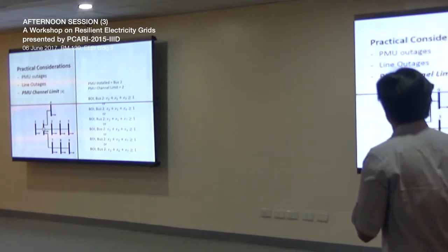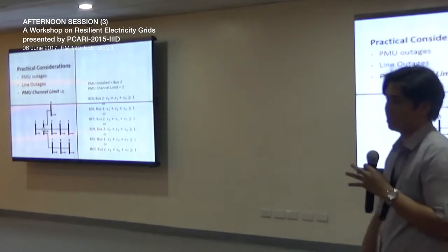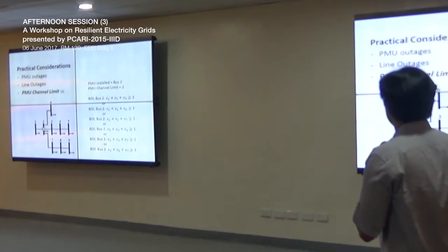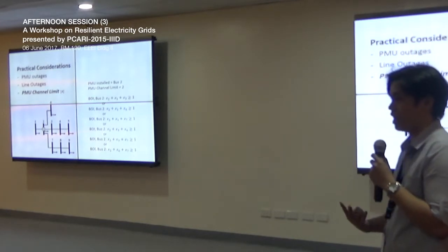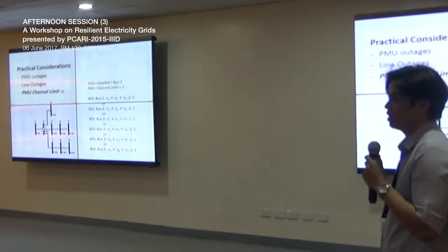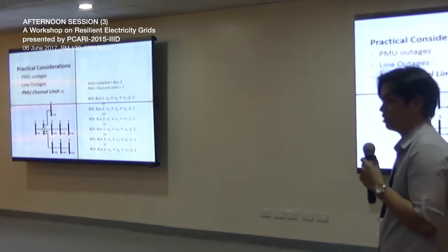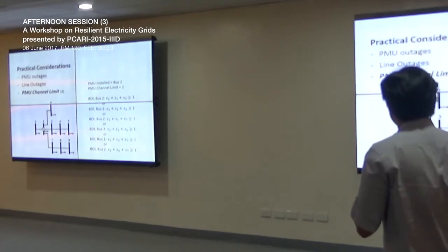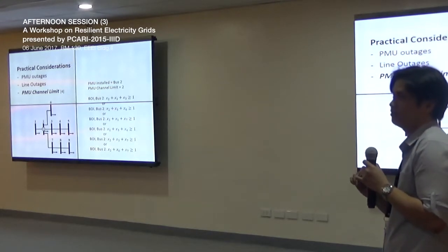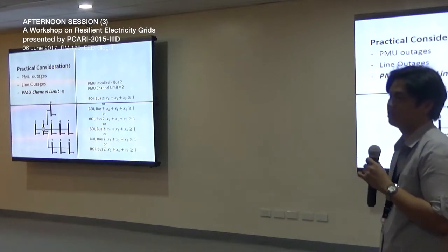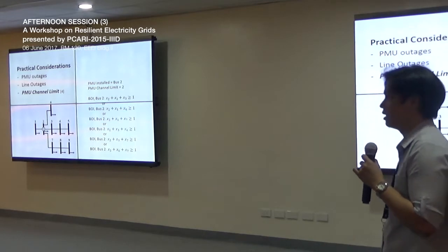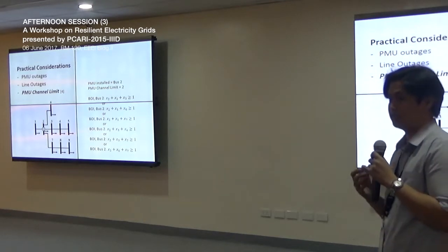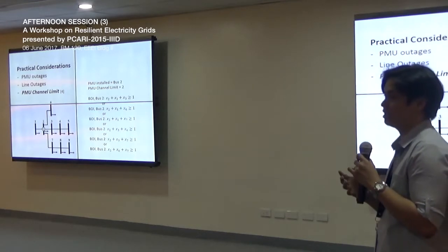Considering the channel limit expands the number of constraints. For example, if you install a PMU in bus 2 with a channel limit of two lines, you have two-out-of-four combinations — so all possible combinations are lines 1-3, 1-6, 1-7, and so on. As you can see, the problem becomes larger. For a 100-bus network, you'd have 100 variables and 100 constraints, but with PMU channel limits, the number of constraints grows even larger. This is computationally expensive, so we need to reduce the search space for the optimization.